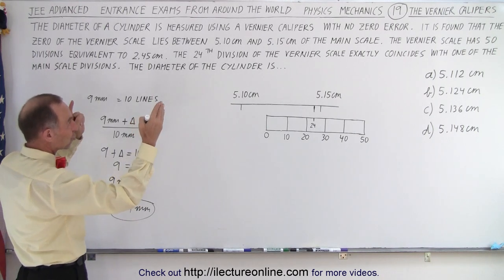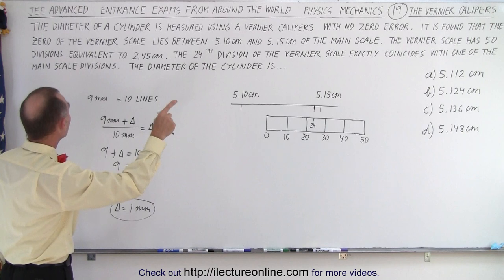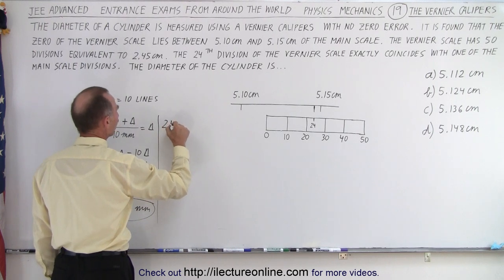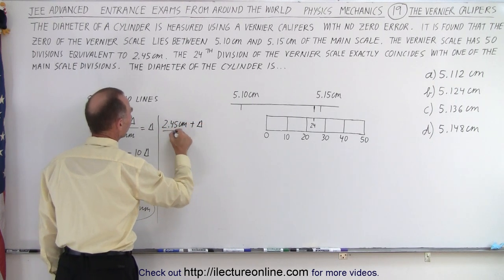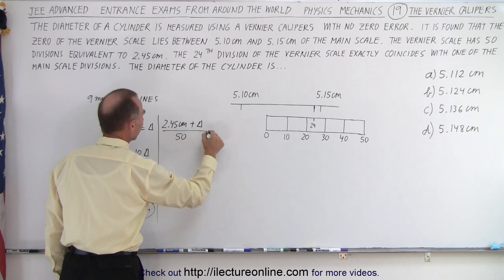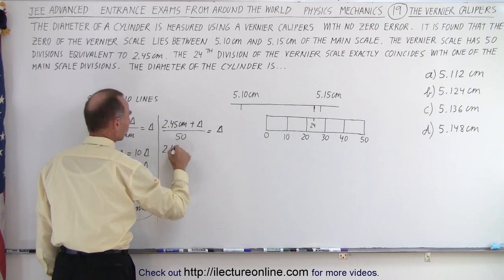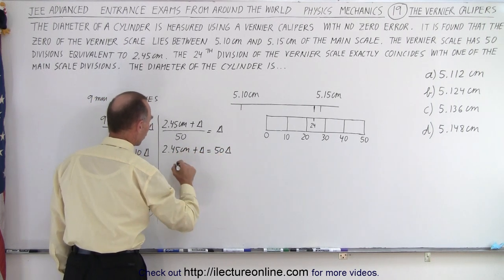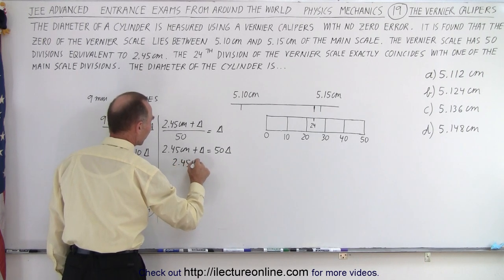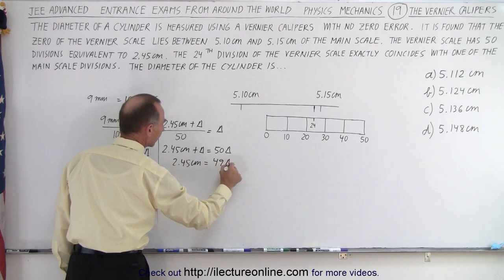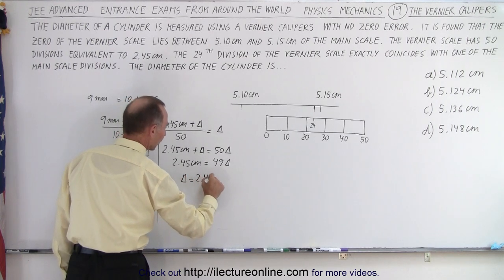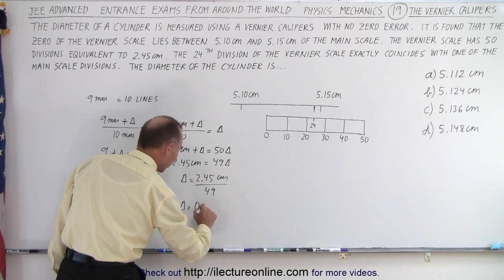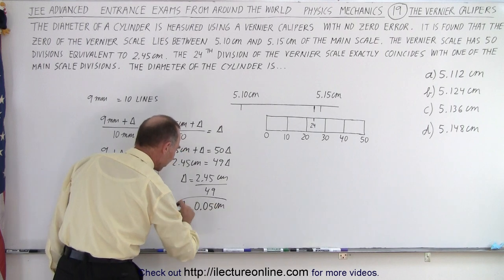Now applying that to this strange-looking vernier caliper, where we have 50 lines or 50 divisions equivalent to 2.45 centimeters, we do the same thing. We go 2.45 centimeters plus delta divided by 50 lines equals delta. So 2.45 centimeters plus delta equals 50 delta, or 2.45 centimeters equals 49 delta. Delta equals 2.45 centimeters divided by 49, and delta is equal to 0.05 centimeters.